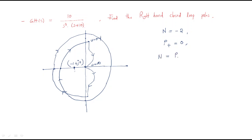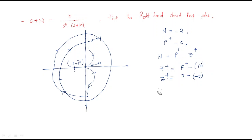Now, how do we find the closed-loop poles? The relation is: N equals P-plus minus Z-plus. Rearranging, Z-plus equals P-plus minus N. Here P-plus is 0, and N is minus 2 (clockwise encirclements), so Z-plus equals 0 minus (minus 2), giving Z-plus equal to 2.